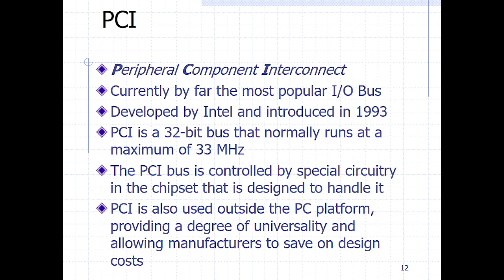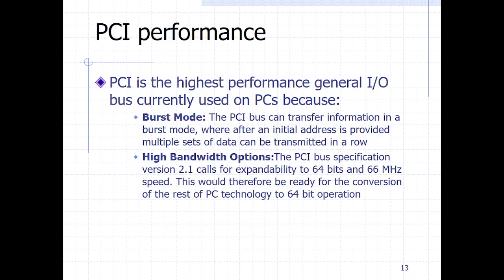Then we have the PCI — Peripheral Component Interconnect. It's more popular compared to the ISA; the speed has improved. It supports up to 33 MHz and has a 32-bit bus address system. It can also handle the 64-bit bus system. The advantage of the PCI is that it offers the bus master mode.